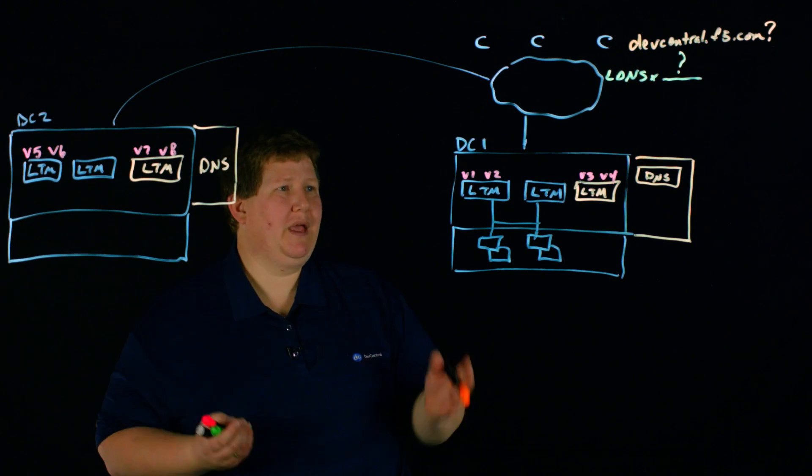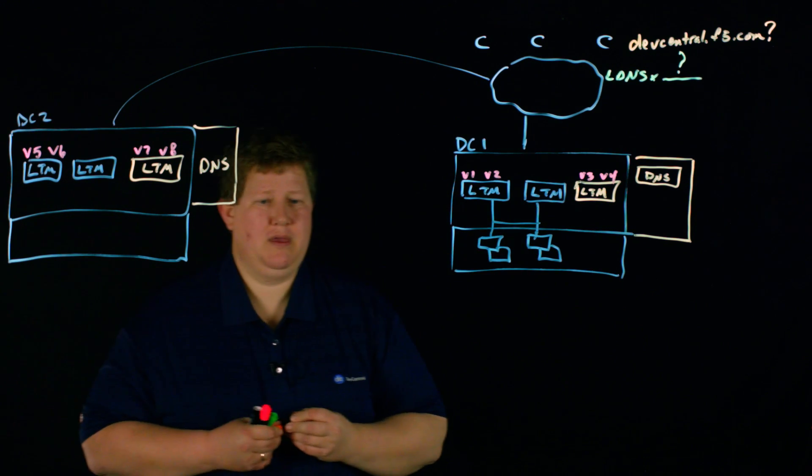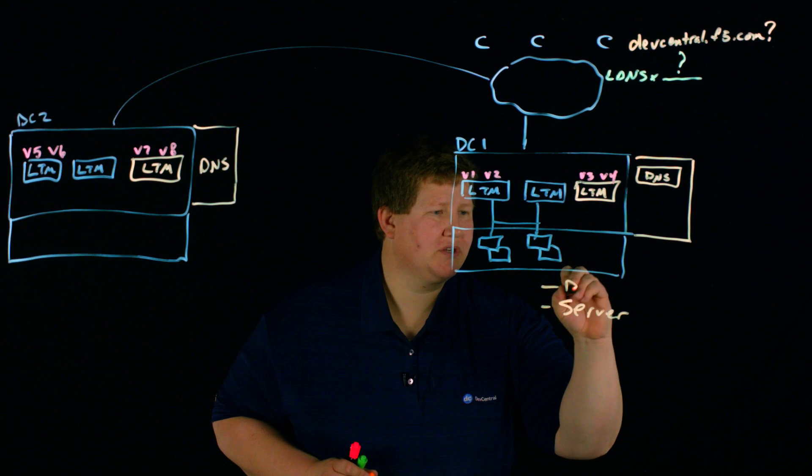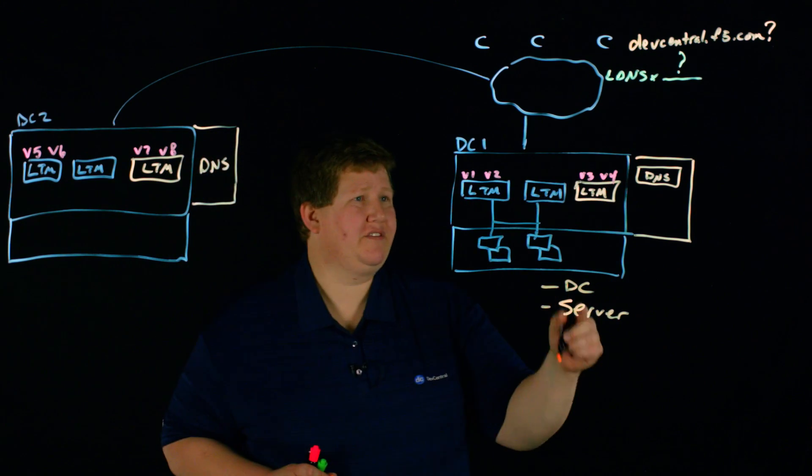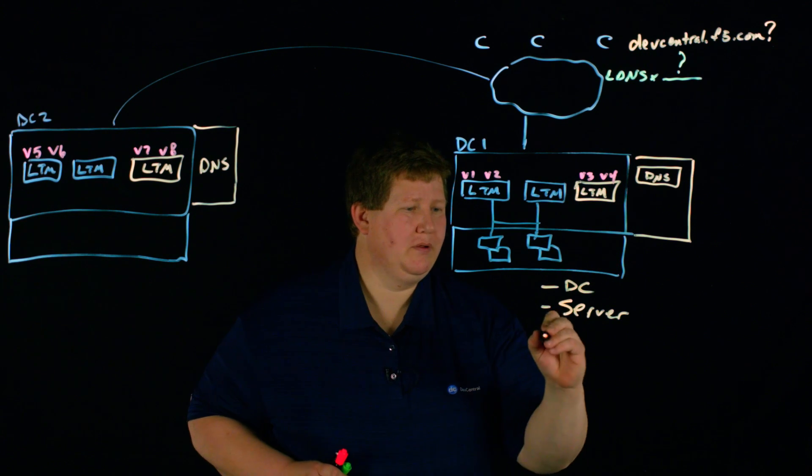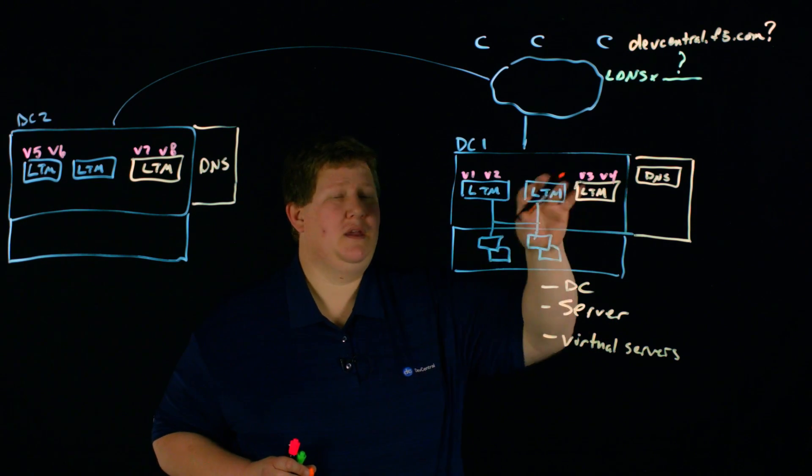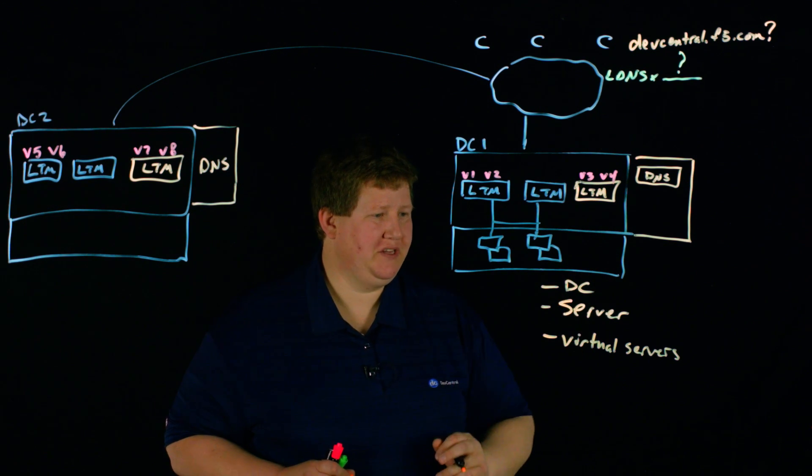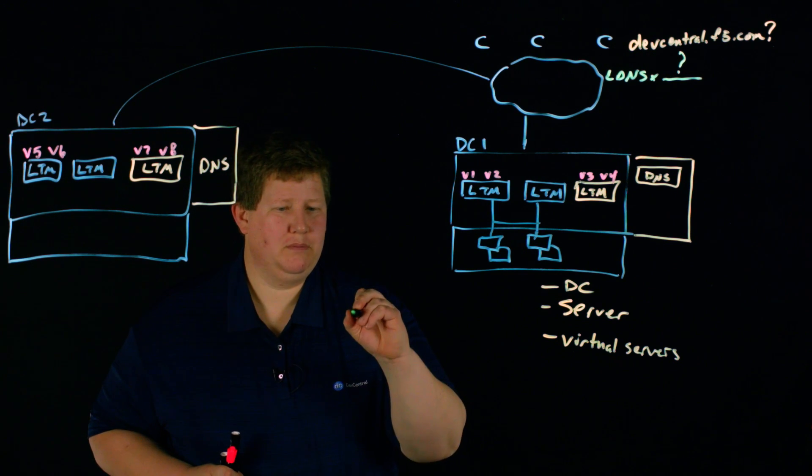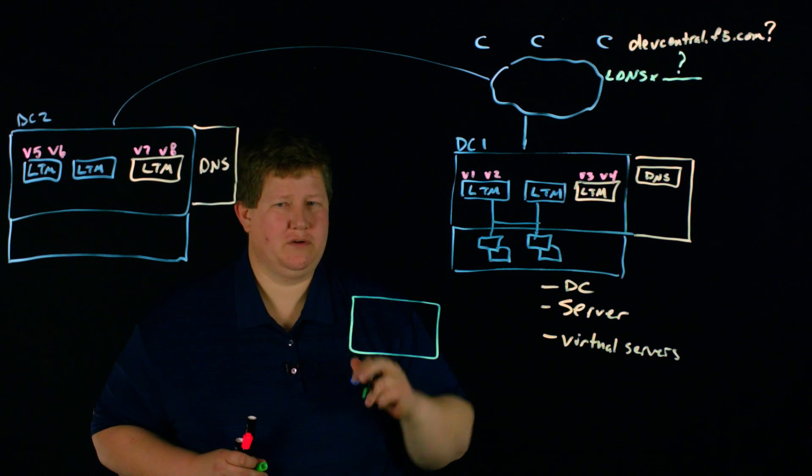And in here, this is where the configuration, like for your Local Traffic Managers, you have your pool, your pool member, your virtual server. On the DNS side, it starts with your server. We'll start with data center. And the data center you would define here. And then the server would actually be this LTM. You can use third party devices as well, but we'll stick with F5. And so your server would be one of these LTMs. And then you have virtual servers from those servers that will then be either discovered or manually added to the configuration for GTM.